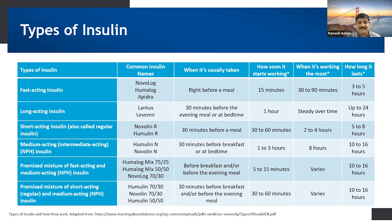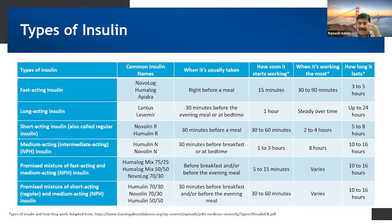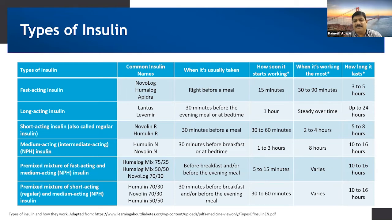Long-acting insulins need to be taken 30 minutes before the evening meal or at bedtime. After one hour they start showing efficacy, working steadily with efficacy lasting up to 24 hours. Short-acting insulins, also called regular insulins — like Novolin-R and Humulin-R — need to be taken 30 minutes before a meal. They start working after 30 to 60 minutes, with maximum peak effect after 2 to 4 hours, and efficacy remaining up to 8 hours.